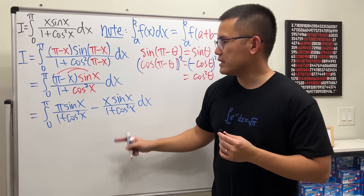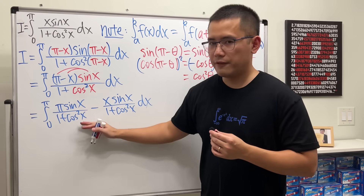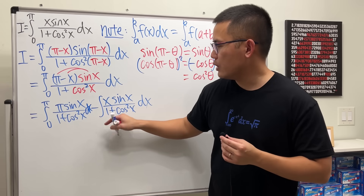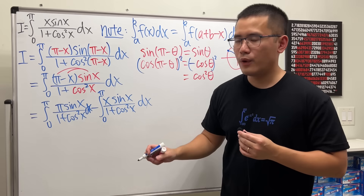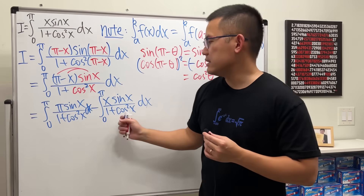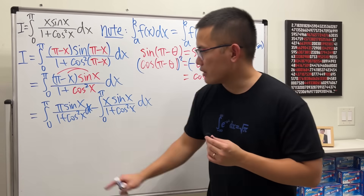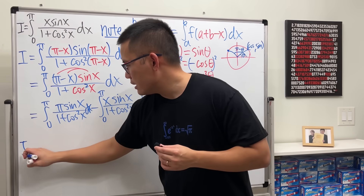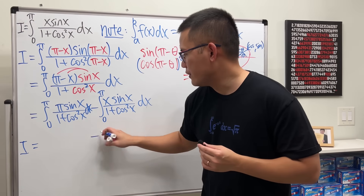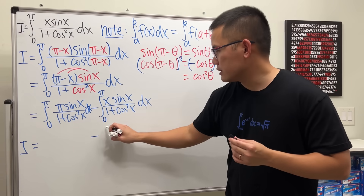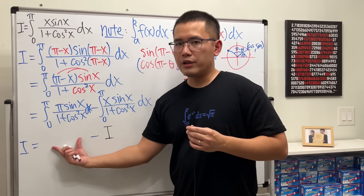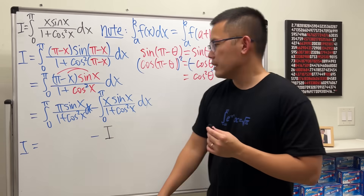I'll close the first integral and write a second integral sign from 0 to π — because that second part is exactly our original integral I. So we have: I equals [first integral] minus I. I just need to figure out the value of the first integral and then solve for I.